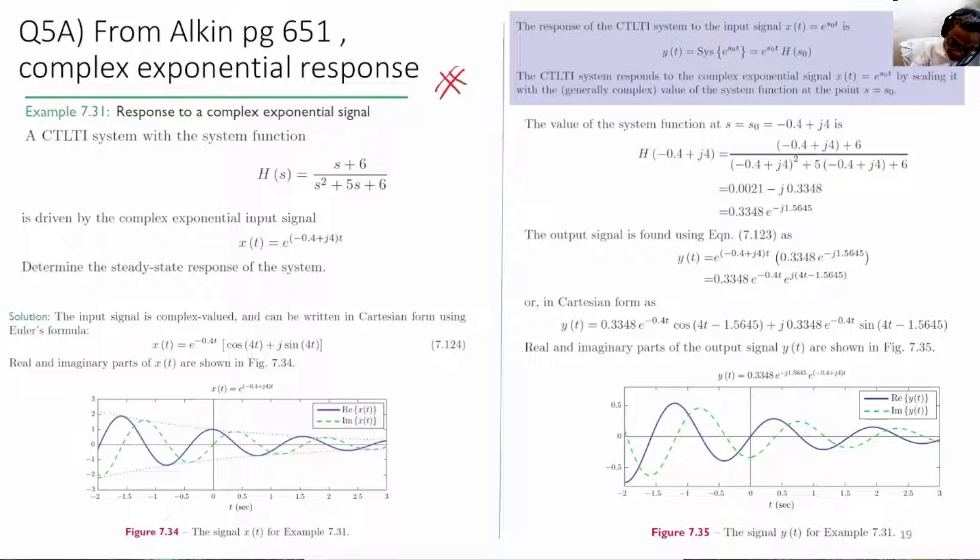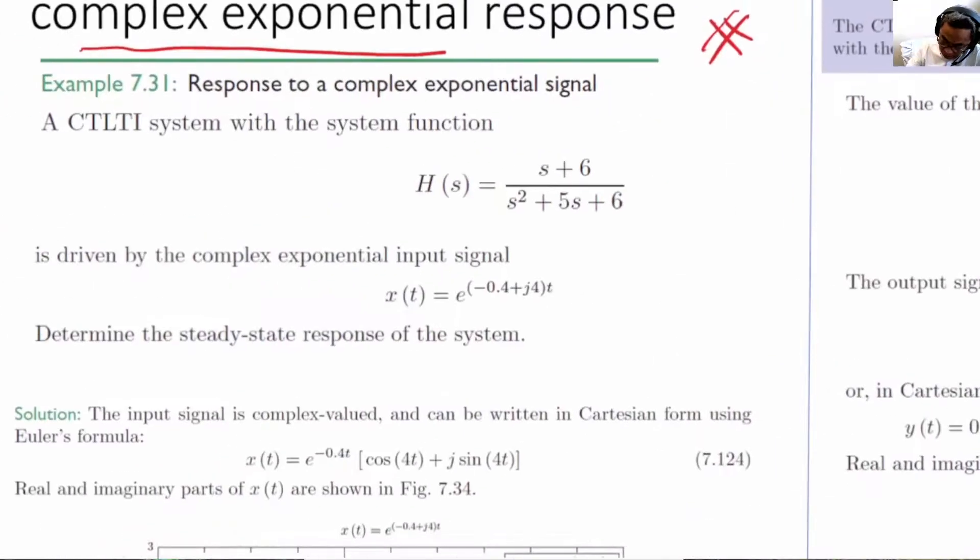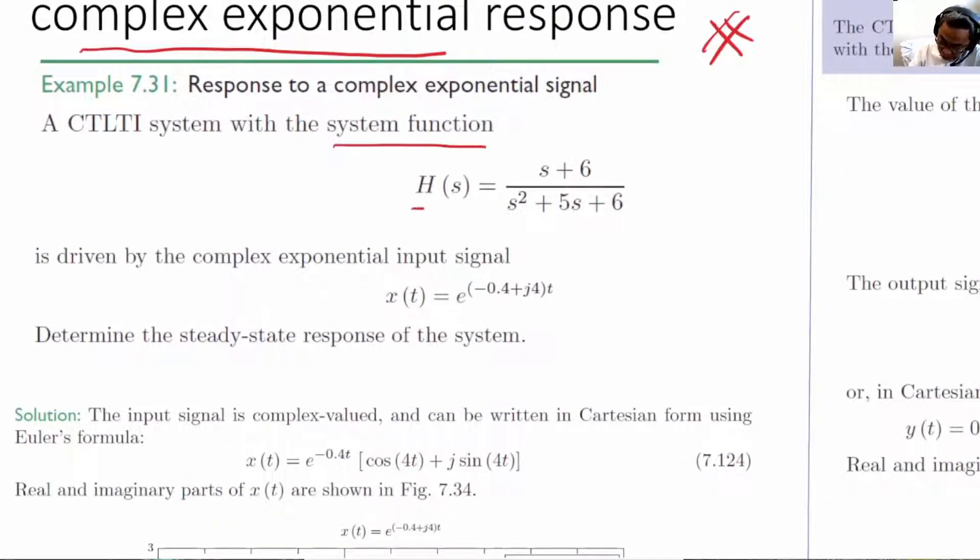H(s) equals s plus 6 divided by s squared plus 5s plus 6. The input is this complex exponential e^(st) where s equals minus 0.4 plus j4.